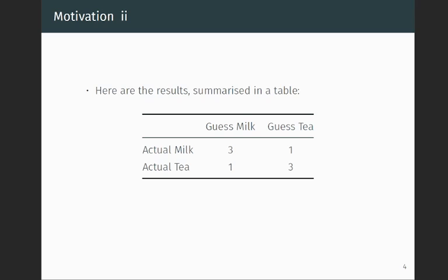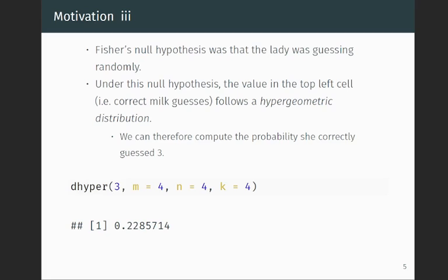And so what Fisher was trying to use that data to make a case that she was just randomly guessing. So that was Fisher's null hypothesis, that the lady is just guessing randomly and not really basing. She doesn't really have any skill to detect which liquid was poured first.